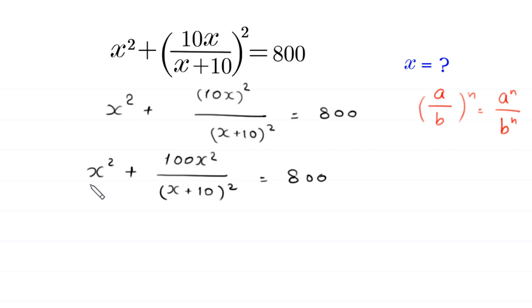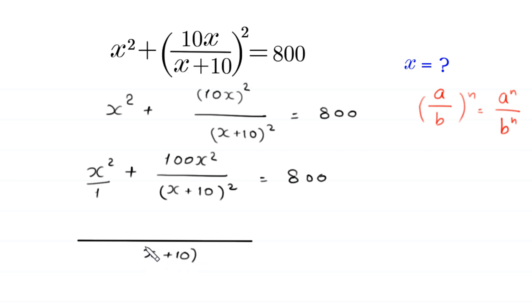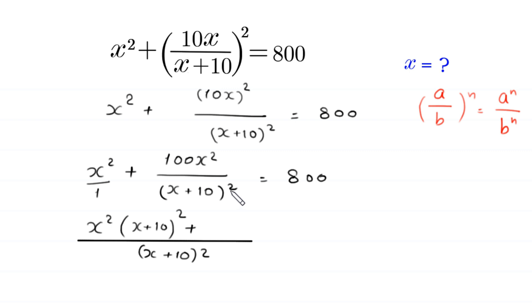Now we take the LCM of 1 and (x plus 10) squared. The LCM is (x plus 10) squared. When we divide this LCM by 1 we get (x plus 10) squared, so we multiply by x squared: x squared times (x plus 10) squared plus 100x squared, all divided by (x plus 10) squared, is equal to 800.